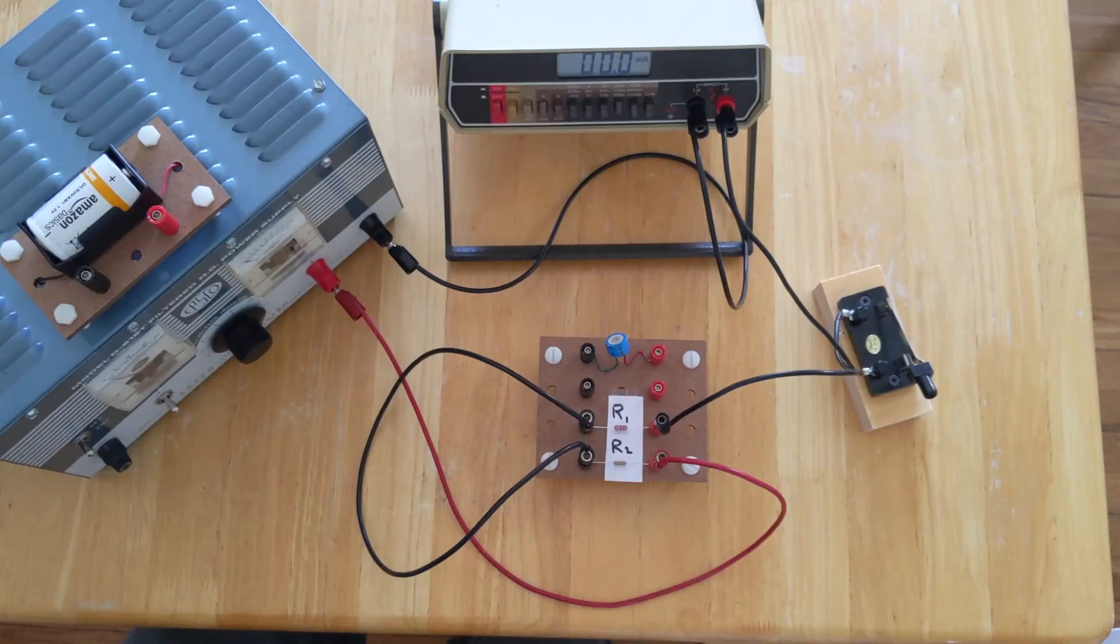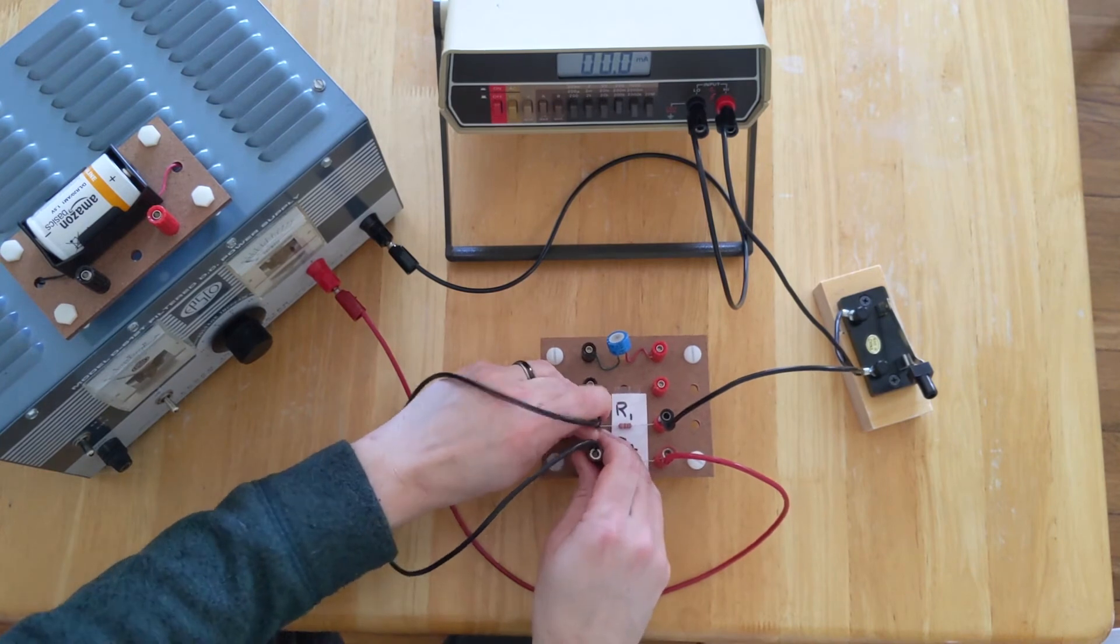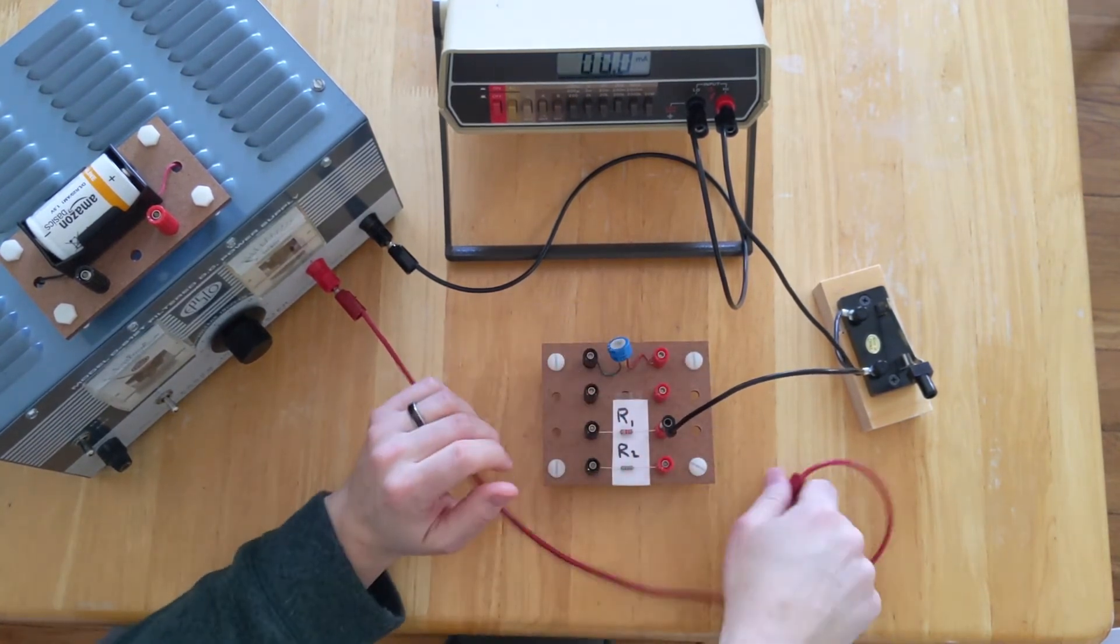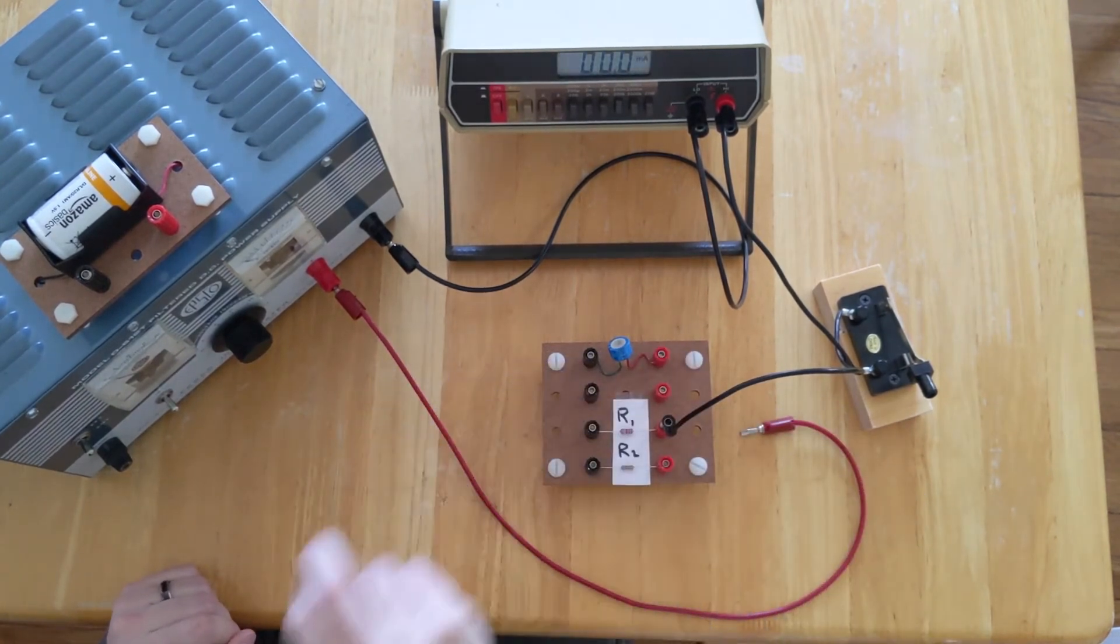For the next part, I'd like to create a parallel circuit. And remember what a parallel circuit is. The electrons are going to go through one path, and they're going to split up between two different paths, and then come back together.